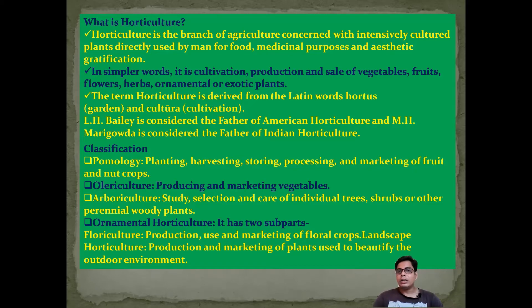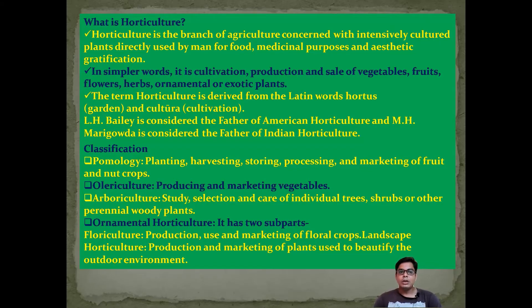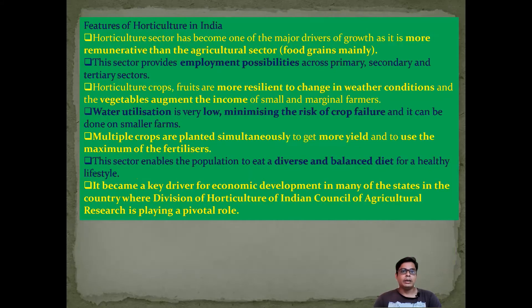L.H. Bailey is considered the father of American horticulture, and M.H. Marigoda is considered the father of Indian horticulture. The classification includes pomology — planting, harvesting, storing, processing, and marketing of nut and fruit crops — and olericulture, the production and marketing of vegetables. Arboriculture is the study and selection of individual trees and shrubs. Ornamental horticulture has two sub-branches: floriculture, covering flowers, and landscape horticulture, the production and marketing of plants to beautify outdoor environments.